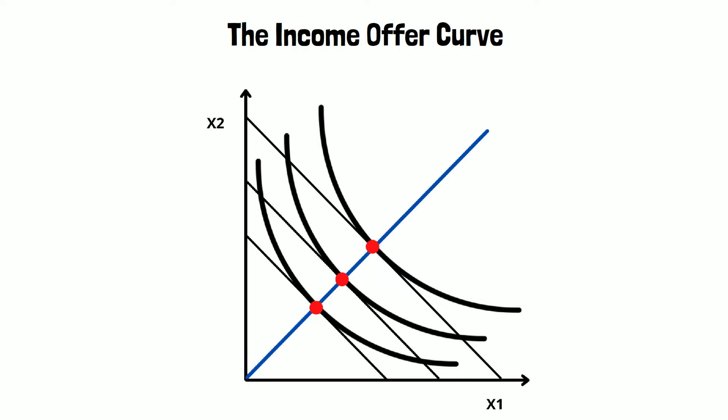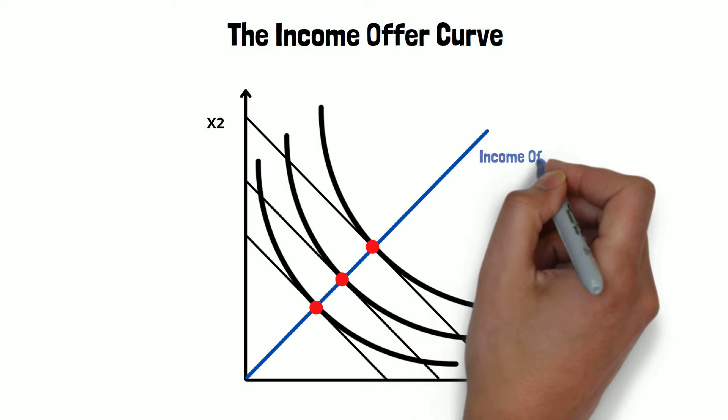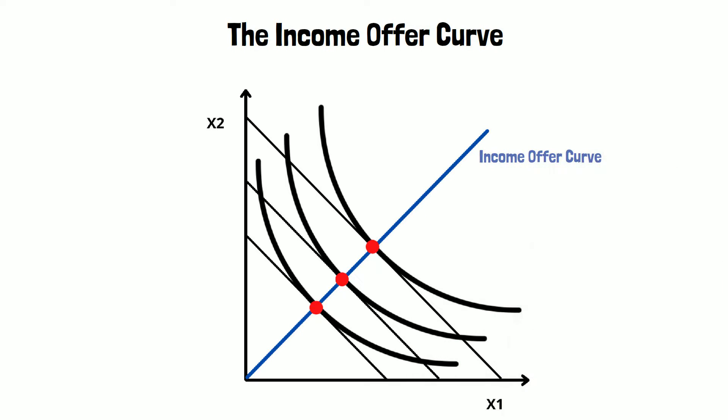When we draw a curve through the optimal consumption bundles for the different income levels we find the income offer curve, which is also known as the income expansion path.